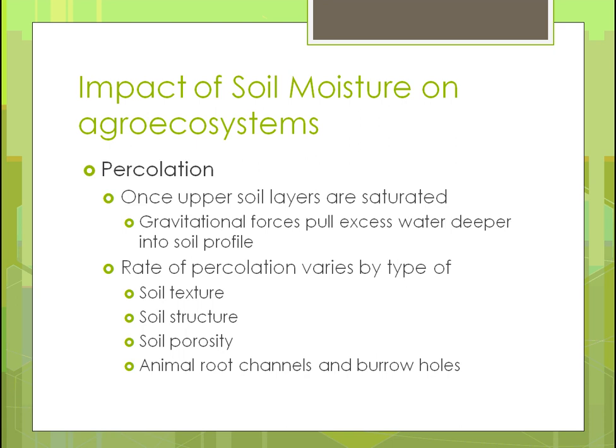Animal channels and burrow holes also affect percolation — for example, worm channels. Roots that grow and eventually die also leave holes in the soil, changing the rate of percolation. So if you have the right kinds of plants, you could end up with a very porous soil.